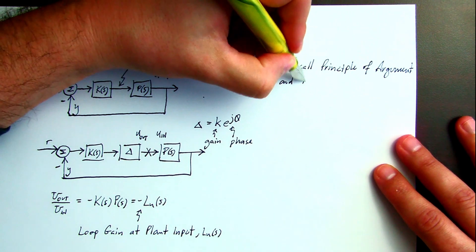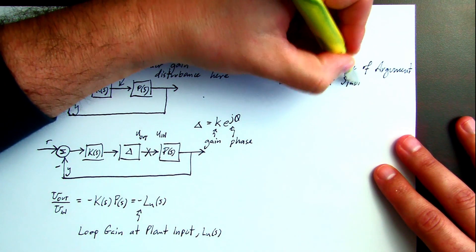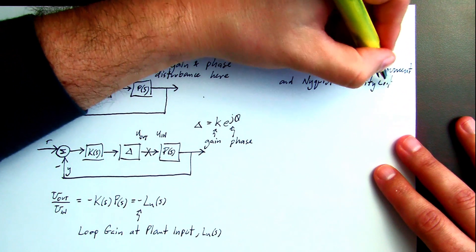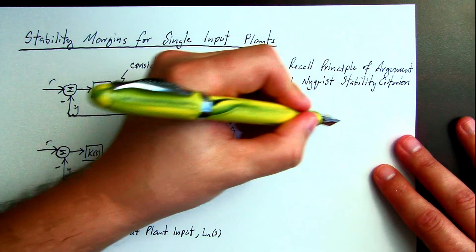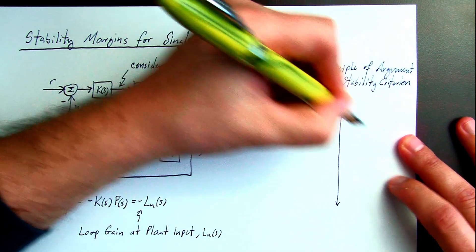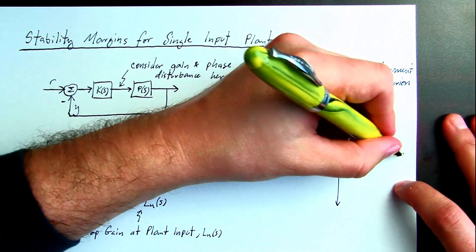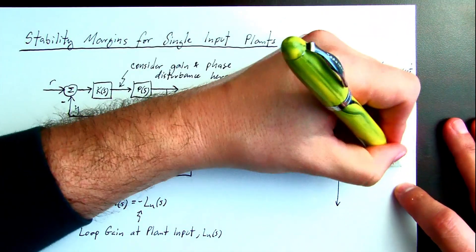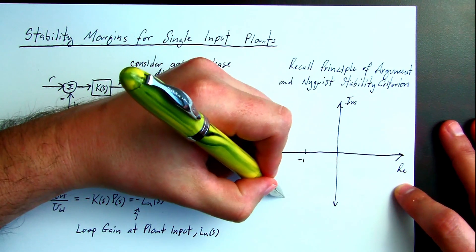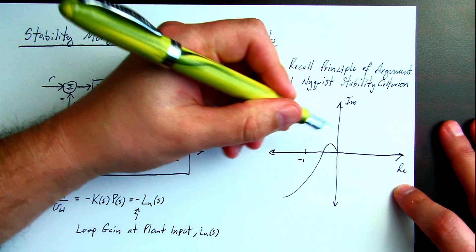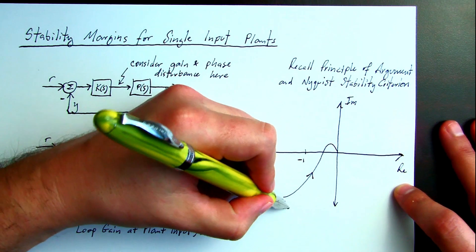And now you'll recall the principle of the argument and the Nyquist stability criterion. Real imaginary plane, critical point, and loop gain. Strictly proper transfer function.